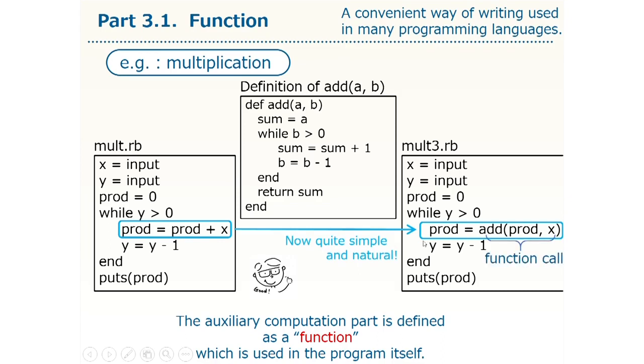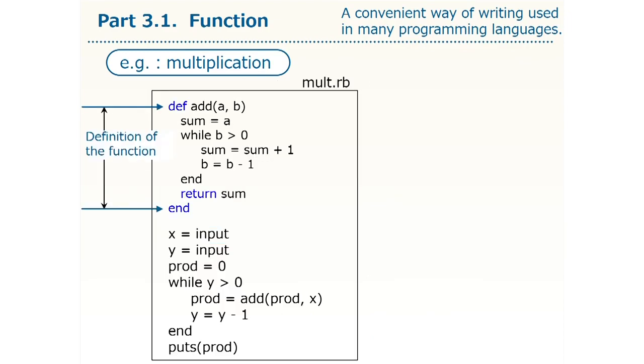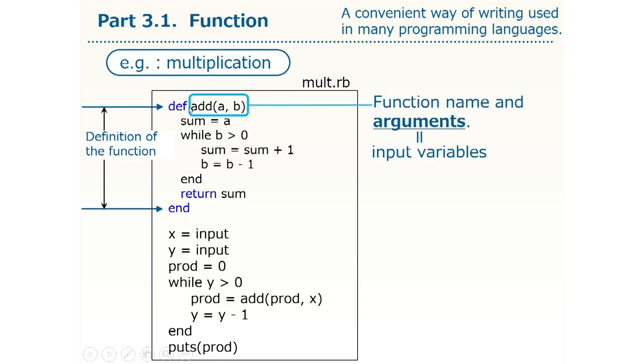By the way, for the computer, this is a command to execute the computation given in the function definition. This execution is referred to as a function call in programming. Let's look more closely at how to define the function. We write the definition of the function between def and end here. Next to the def, this add is the name of the function. We wanted to call this function add, so let's go with add.